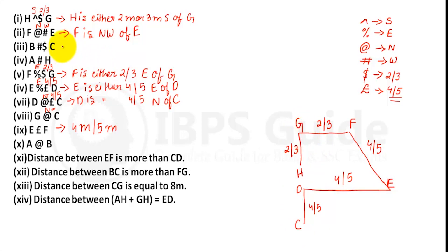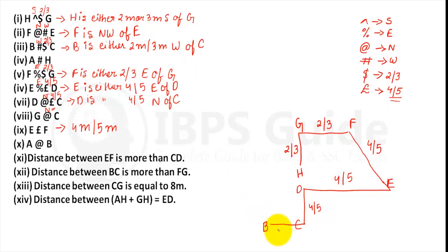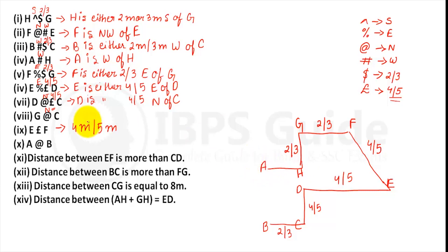Third point: B hash dollar C — 'hash' means west and 'dollar' means either 2 or 3 meters, so B is either 2 or 3 meters west of C. Fourth point: A hash H — 'hash' means west, so A is west of H. Last point: A at-the-rate B — 'at-the-rate' means north, so A is north of B.